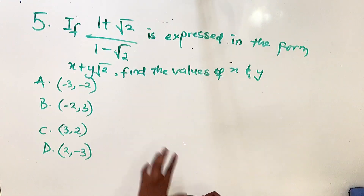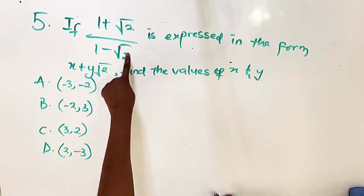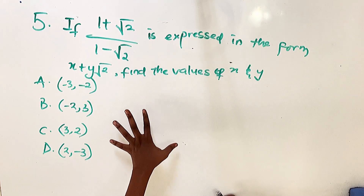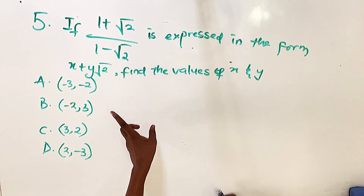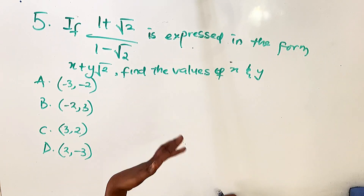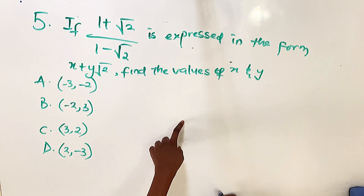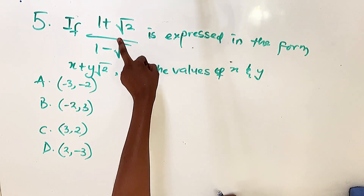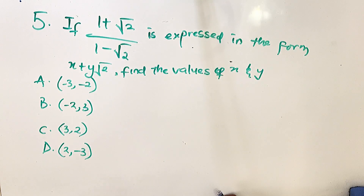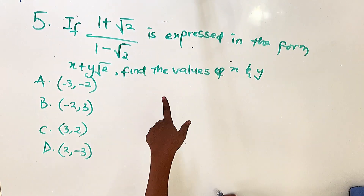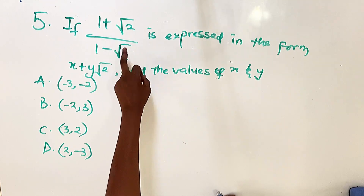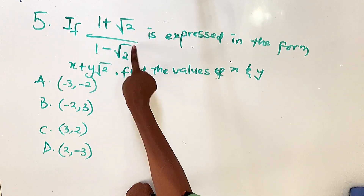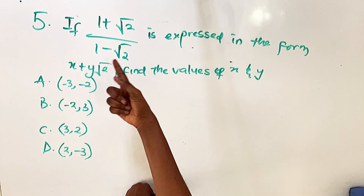Question five: if (1 plus root 2) over (1 minus root 2) is expressed in the form x plus y root 2, find the values of x and y. This requires us to rationalize the surd. A surd needs rationalizing when the denominator contains a square root sign — we need to eliminate that square root from the denominator. To do this, we multiply both numerator and denominator by a conjugate value.